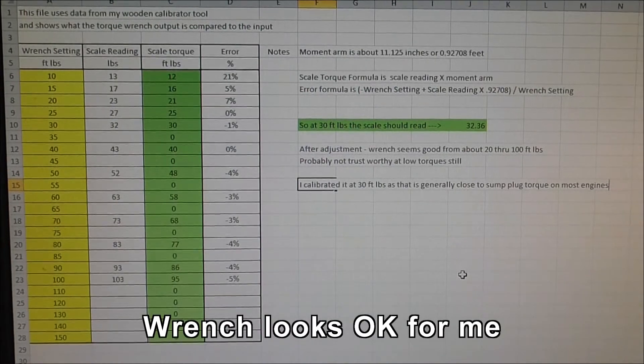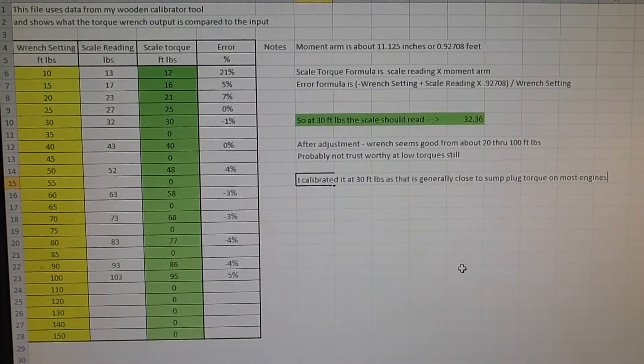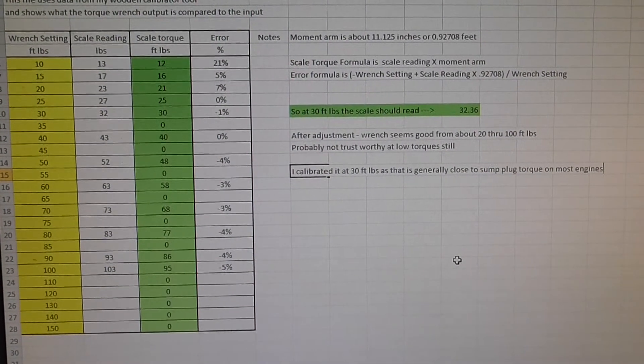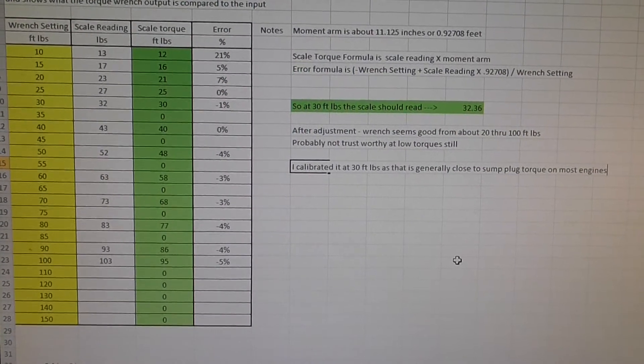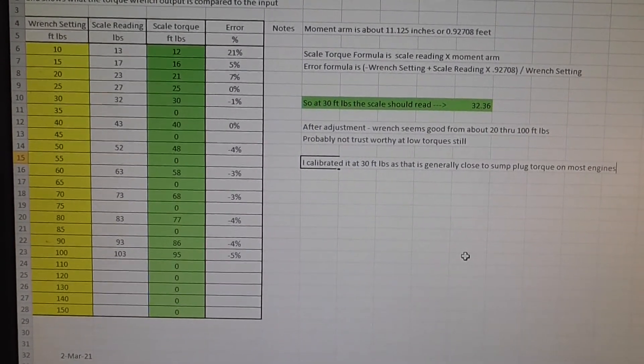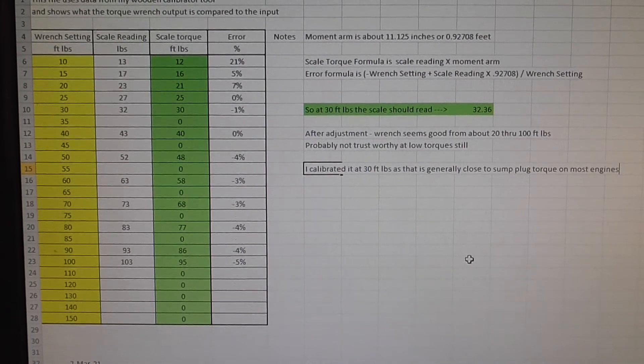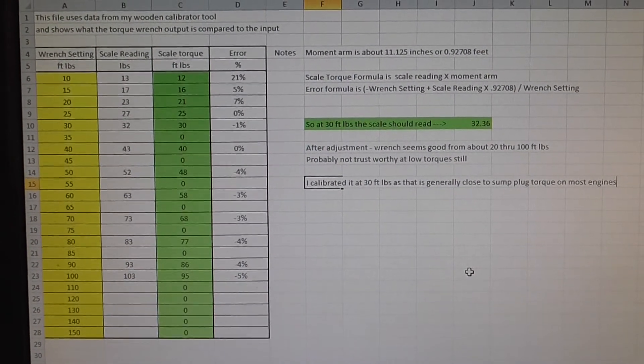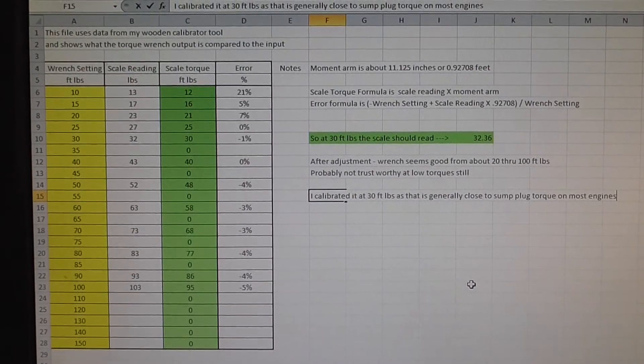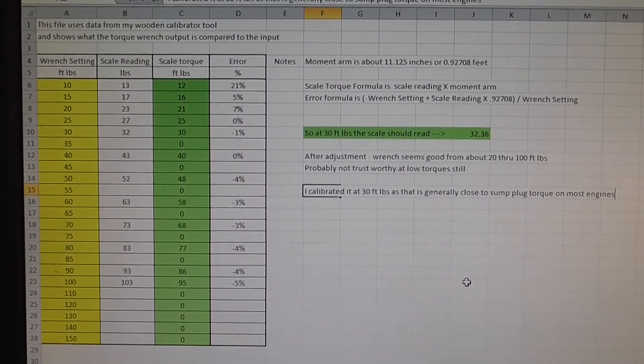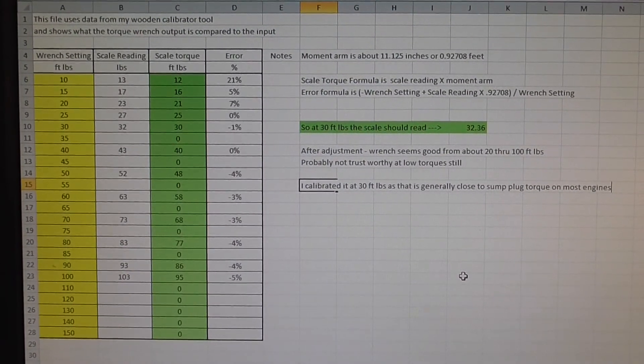And there we go. There is the completed chart. It's now a lot more accurate, except at the very low levels, where I'd never trust it anyway. I calibrated it at 30 because most spark plugs I work on are somewhere around 25-30 foot-pounds. So calibrating at that, I should be pretty safe.